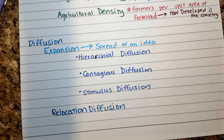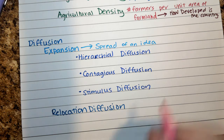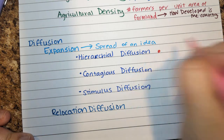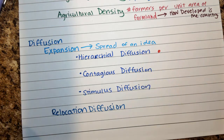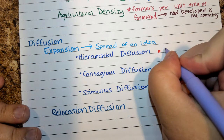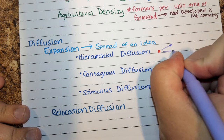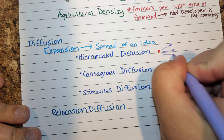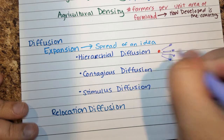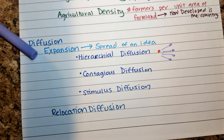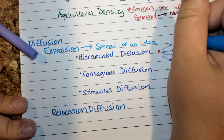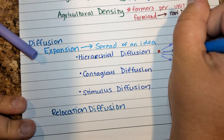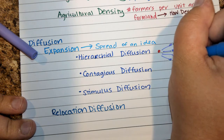Hierarchical diffusion is the spread of an idea from people of power, starting at the hearth — where an idea originates — and then going out to another group of people, and from there spreading to another node of people.